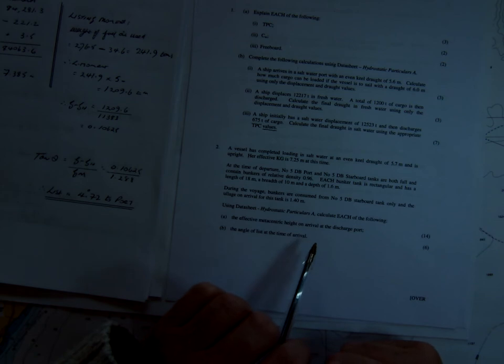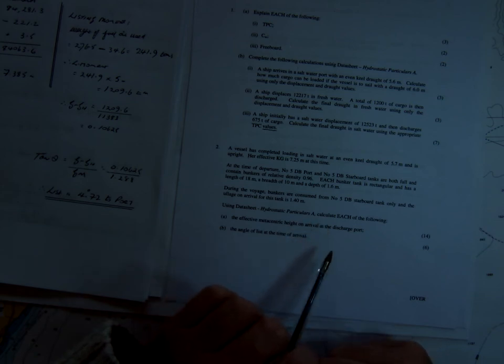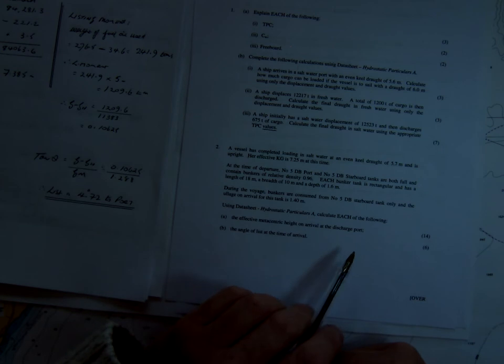five double-bottom port and starboard are both full and contain bunkers of relative density 0.96. Each bunker tank is rectangular, has a length 18, breadth 10, depth 1.6. During the voyage, bunkers are consumed from number 5 double-bottom starboard tank only, and the ullage on arrival for this tank is 1.4. We need to use our hydrostatic particulars and calculate the effective metacentric height on arrival and the angle of list at the time of arrival.